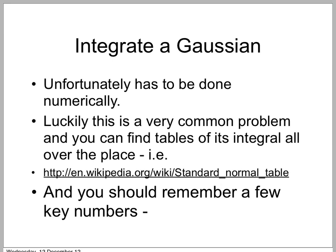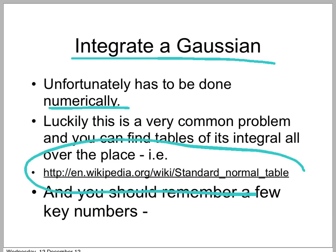To work out the probability of getting a particular result — say a value more than something, or within a certain range — you have to integrate this. Unfortunately, Gaussians are hard to integrate. Look at the Wikipedia page about integrating Gaussians if you don't believe me. It's generally done numerically. Luckily, it's a very common problem — the integral of this curve is built into something called the error function, which you will find in many calculators and computer programs. But more often, you can just look up a table — there are many available — which tells you the integral up to various values.